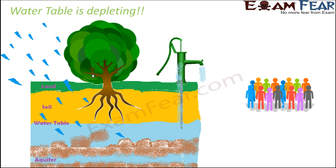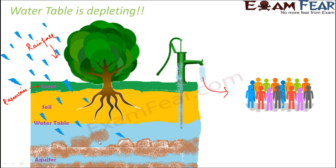With population increasing so fast, needs are also increasing, and therefore water usage is increasing for various purposes — construction, household needs, and wastage. The supply of groundwater comes from either rainfall or other water reservoirs. When we utilize groundwater more than what is replenished, the water table depletes. It's like a bank where you withdraw more than you deposit — the net balance reduces.